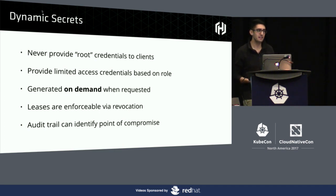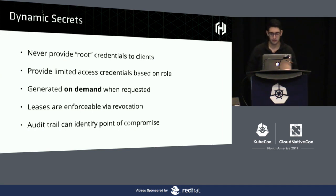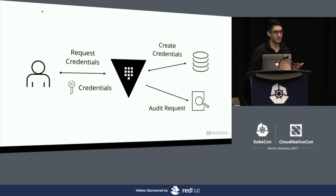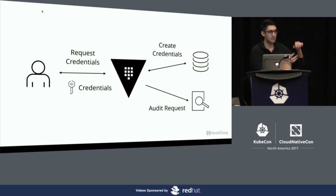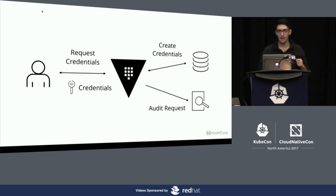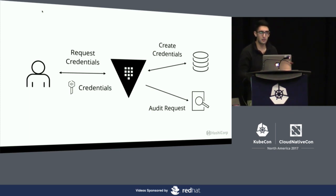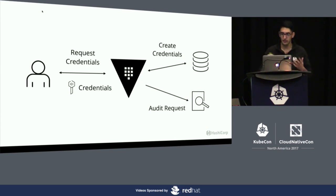Instead, what we'd like is a unique credential per client, generated on demand. So when we see a token that gets leaked, we have a very high level of certainty that it was Armand who accessed it at 2:45 p.m. and that credential was unique to him. The mechanism within Vault is called dynamic secrets. At the highest level, the way it works is: a client connects to Vault and says, I want a database credential. Vault ensures the client is authenticated and authorized, then goes and talks to the database and creates a new dynamic username with a random user and random password, scoped down with a grant statement, audited, and handed back to the client.